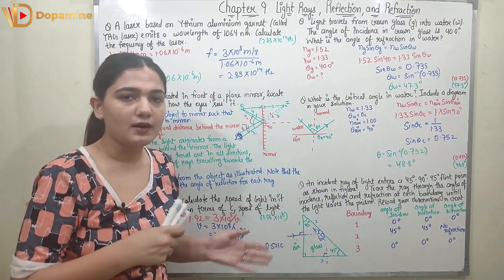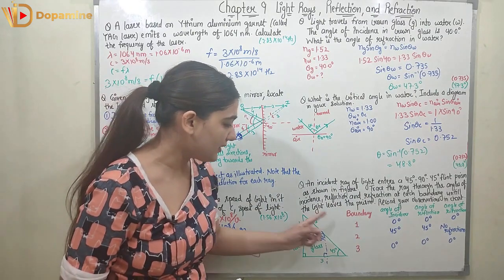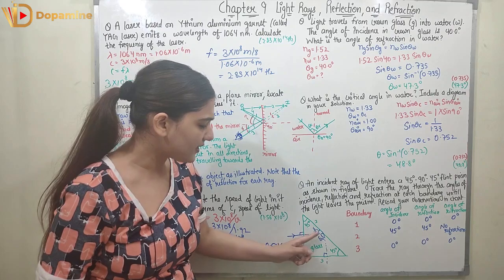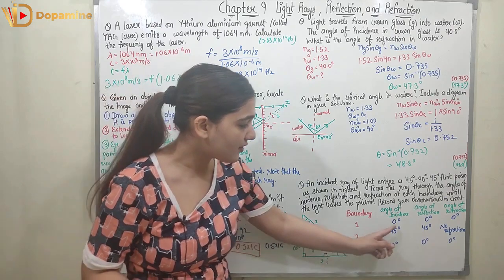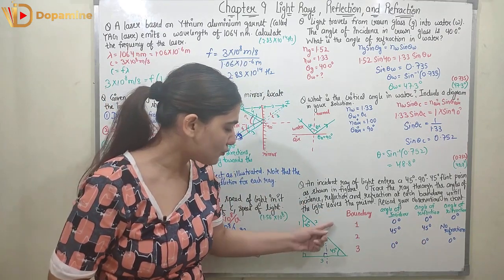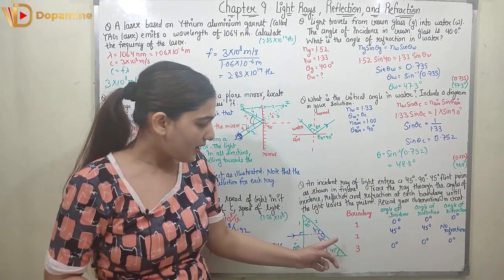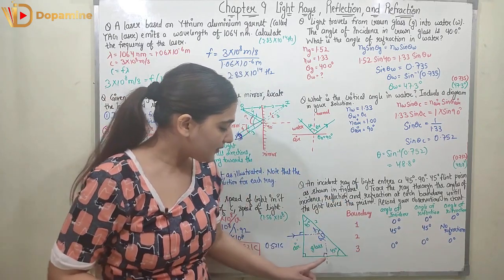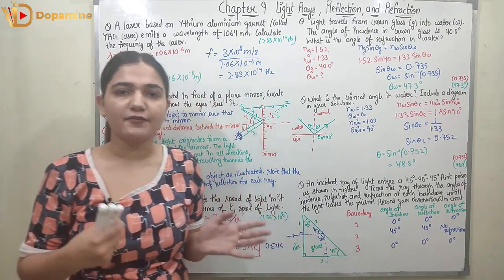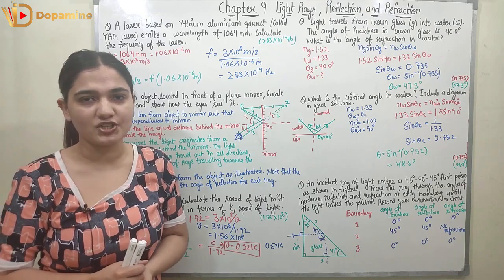At boundary 2, the angle of incidence is 45° and the angle of reflection is 45°, but there is no refraction — light does not exit through boundary 2. At boundary 3, the angle of incidence is 0°, and the angles of reflection and refraction are both 0°. I hope you understood all of them. Thank you so much.